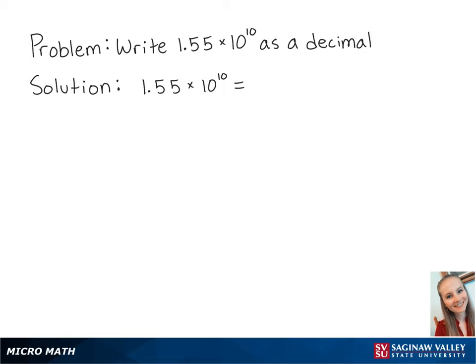For this problem, we're going to write 1.55 times 10 to the 10 as a decimal. Since 10 is raised to a positive number, this means that the number is large, and we're going to move the decimal to the right. Since 10 is raised to the 10th power, we're going to move the decimal to the right 10 times.